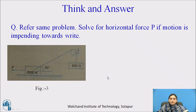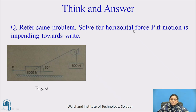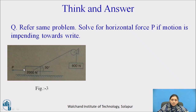Now read the question carefully and answer it. Refer to the same problem and solve for the horizontal P if motion is impending towards the right. Pause the video and solve — the only change is that motion is now towards the right instead of the left. What will be the value of P?